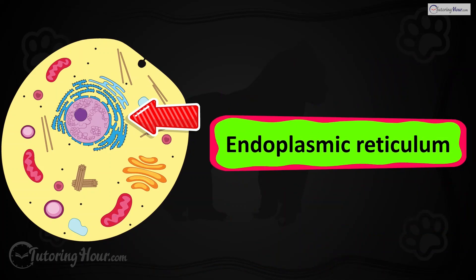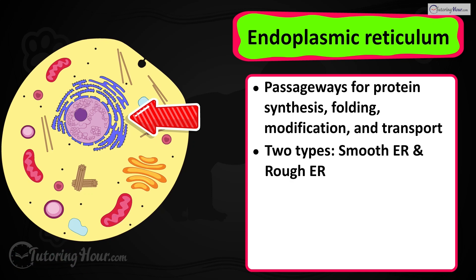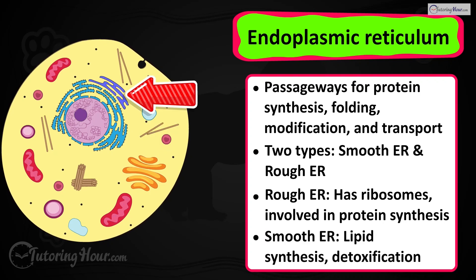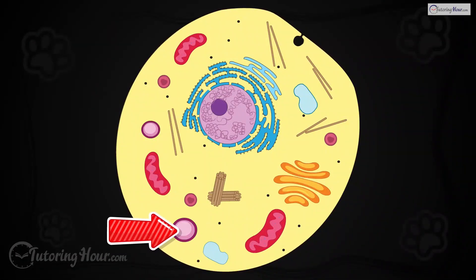The correct answer is the endoplasmic reticulum. These passageways are involved in the synthesis, folding, modification, and transport of proteins. There are two types of ER: smooth and rough. The rough ER has ribosomes attached to it and is involved in protein synthesis, while the smooth ER is involved in lipid synthesis and detoxification.